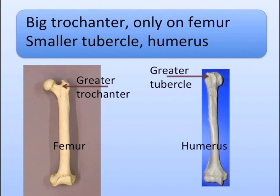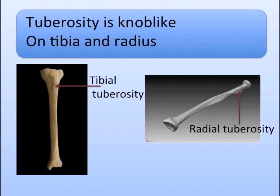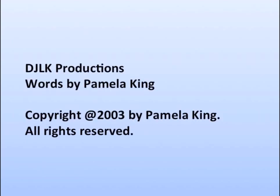The trochanter is only on the femur. The smaller tubercle is on the humerus. Tuberosity is knob-like, found on the fibula and radius.